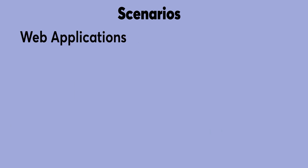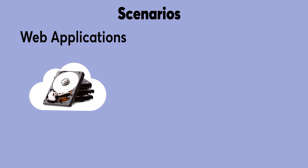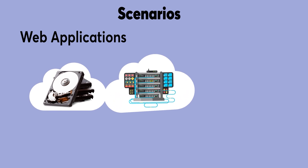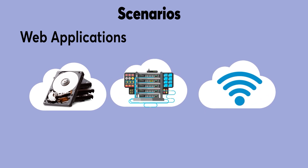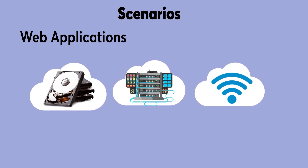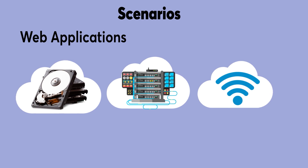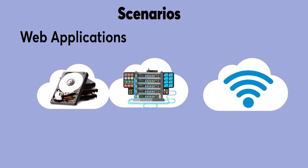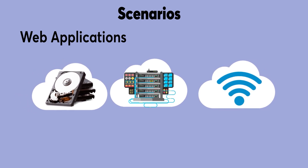Web apps: IaaS provides all the infrastructure to support web apps, including storage, web and application servers, and networking resources. Your organization can quickly deploy web apps on IaaS and easily auto-scale infrastructure up and down when demand for the apps is unpredictable.